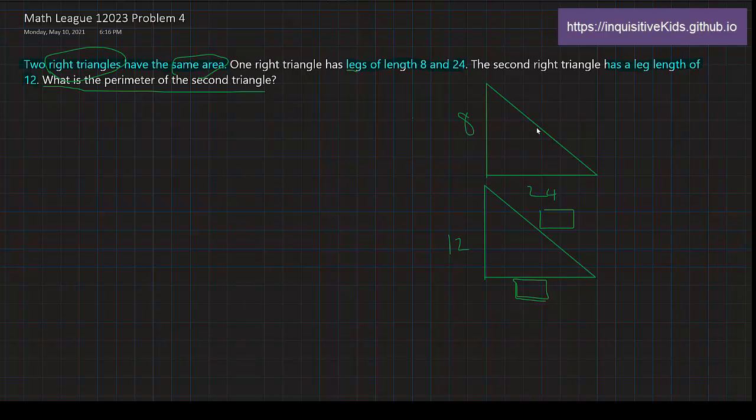Okay, now we're going to go back to the first sentence. It says that these two right triangles have the same area. Let's first find the area of the first right triangle. That would be 8 times 24 times 1 half or 0.5. And after we do that, we'll get 96. So, the area of the first triangle would be 96.